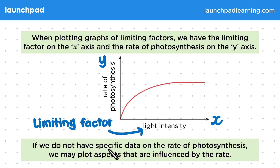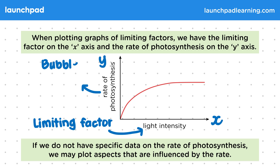If we don't have specific data on the rate of photosynthesis, we may plot aspects that are influenced by the rate. An aspect influenced by light intensity could be the number of bubbles of oxygen produced per minute from pondweed. You need to be able to plot and draw appropriate graphs, selecting appropriate scales for the axes.